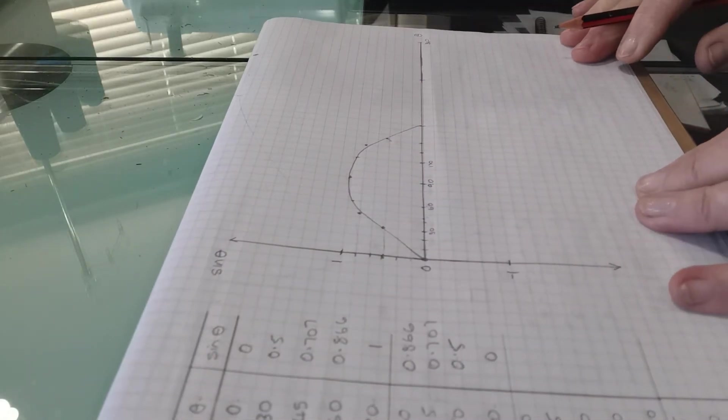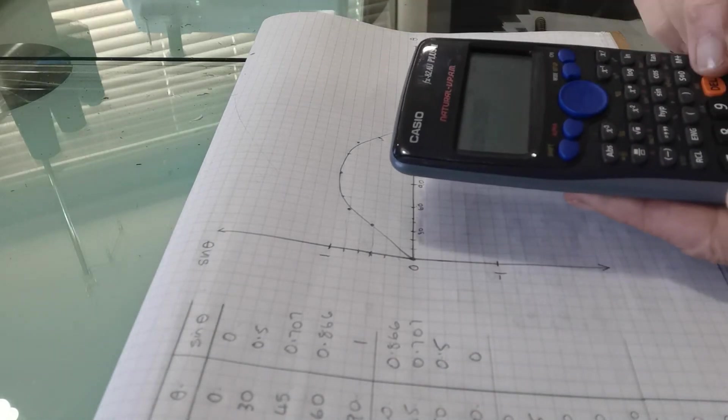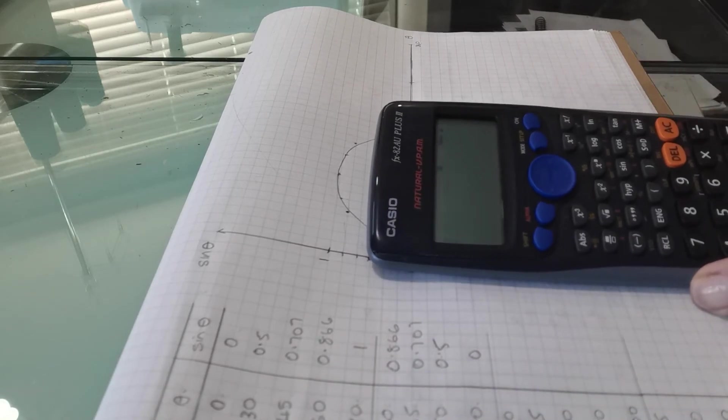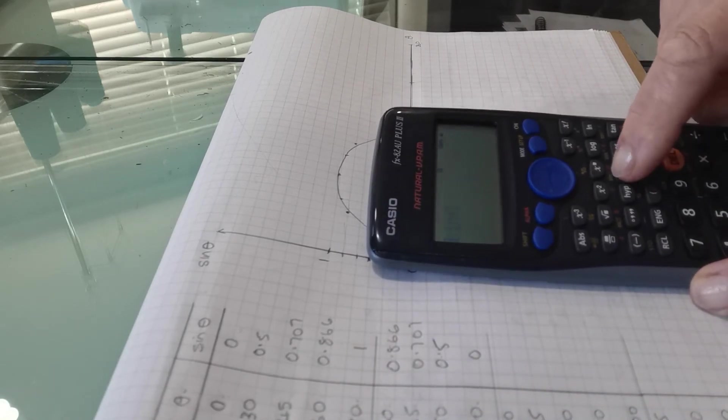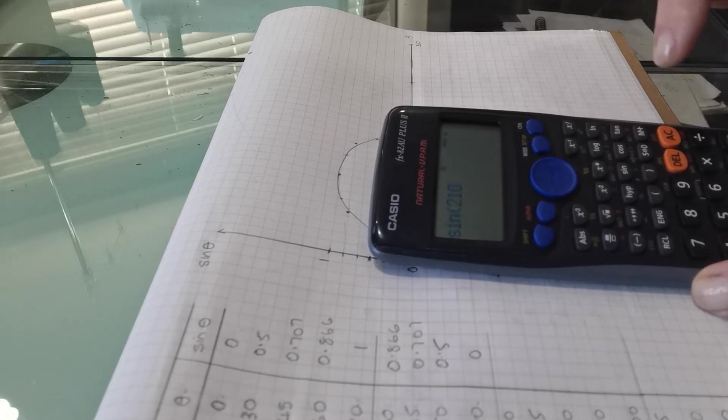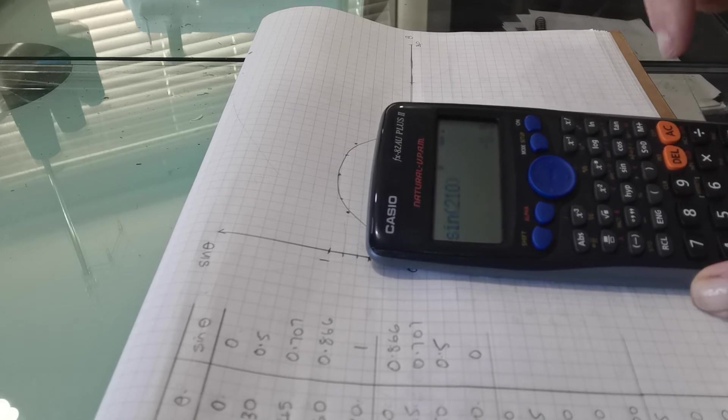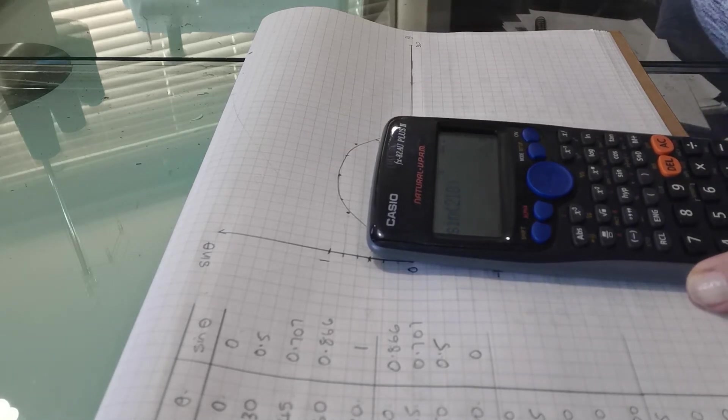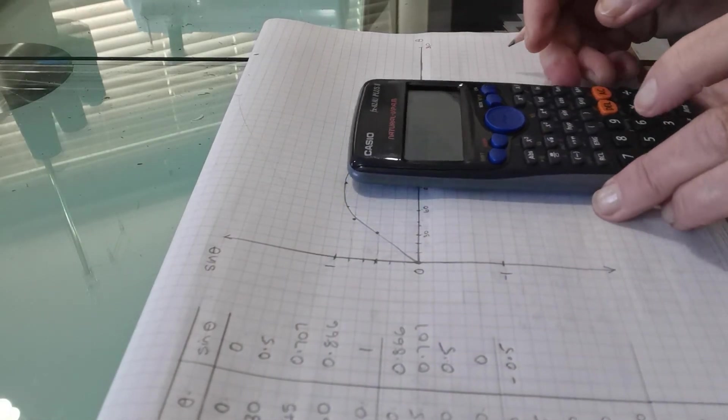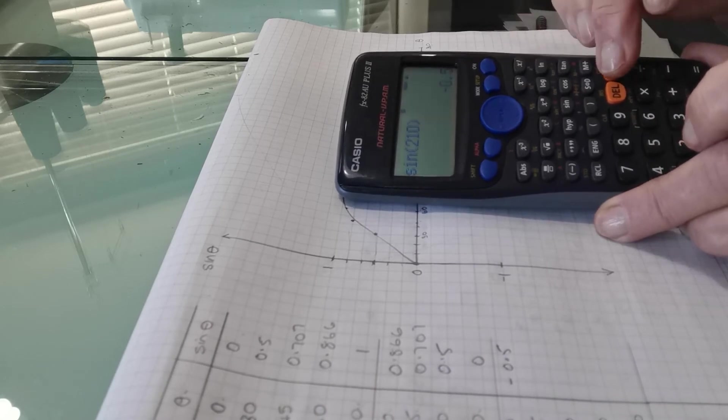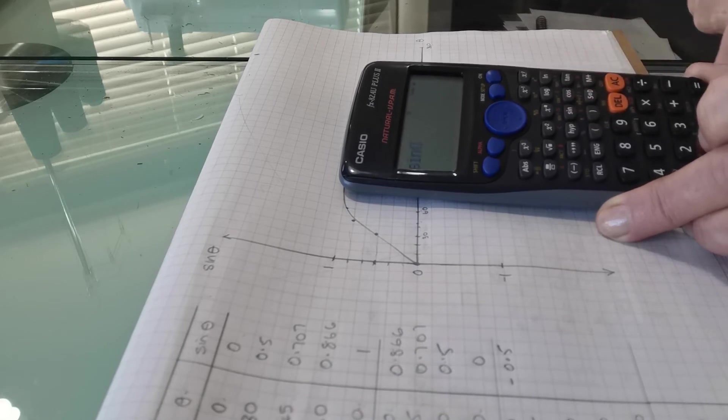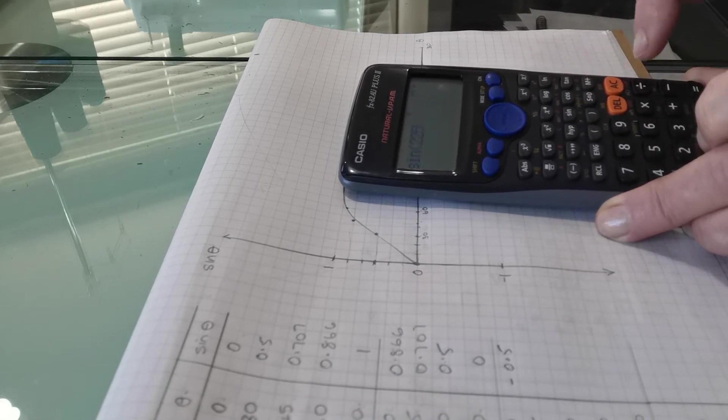So to plot the second part, we'll need to go back to our calculator, clear and sign 210. So sign 210. Close the bracket is negative 0.5. So this is a bit of a departure now. So it's negative 0.5. Clear and sign of 225. Close the bracket.